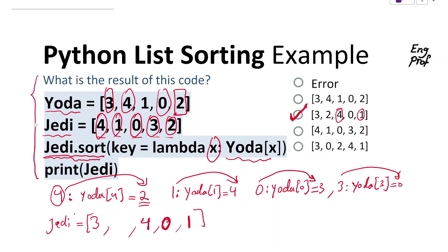And finally, for Yoda[2], Yoda[2] is exactly 1, so 2 sits in position 1. That's the answer for the sorted Jedi based on the key that is presented here.